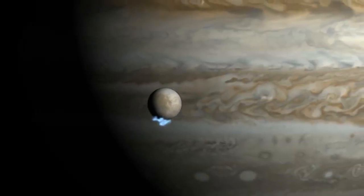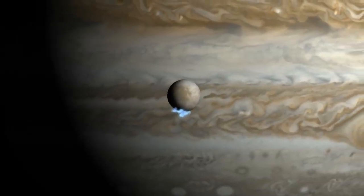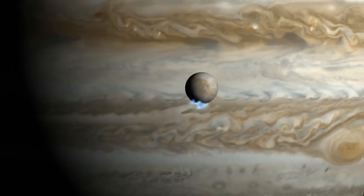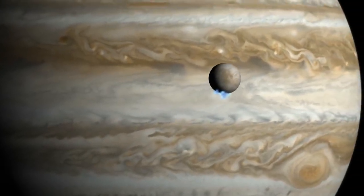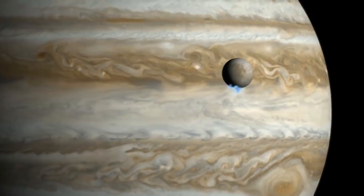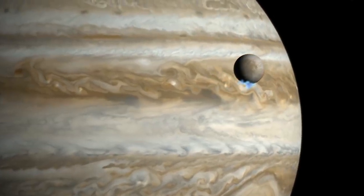In 2013, Hubble provided the first observational evidence of water vapor erupting from the frigid surface of Jupiter's moon Europa, near its south pole.